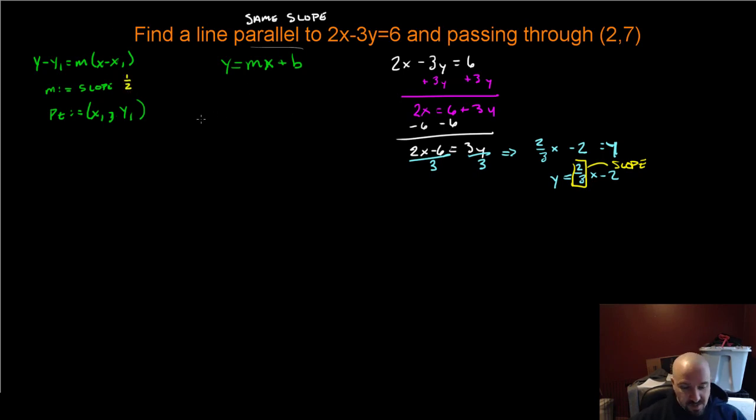My slope is 2/3 and my point here is the point (2, 7). I can just chuck this directly into the point-slope form. So it's going to be y - 7 = (2/3)(x - 2). And I'm done. That's it. I could leave it like that.